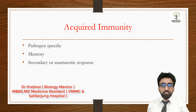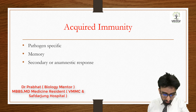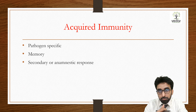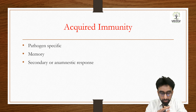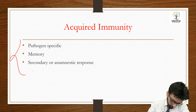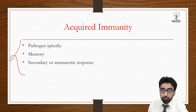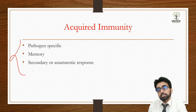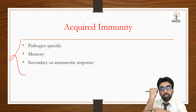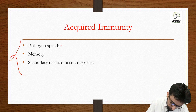Hi students, I'm Dr. Prabhat and today we are going to learn about acquired immunity. Innate immunity we have seen in the last lecture. Acquired immunity is immunity which has been acquired — matlab liya gaya hai — after birth. These characters are specific for acquired immunity. Innate immunity is non-specific; for example, the skin barrier works for bacteria, virus, and fungi alike. Acquired immunity is pathogen-specific.